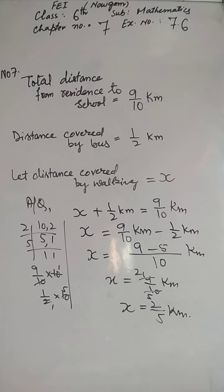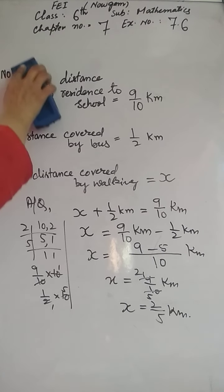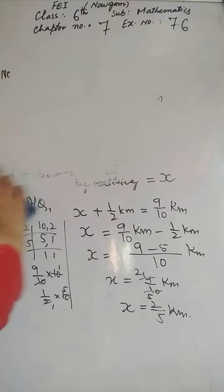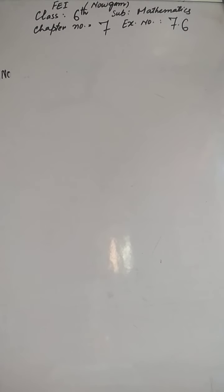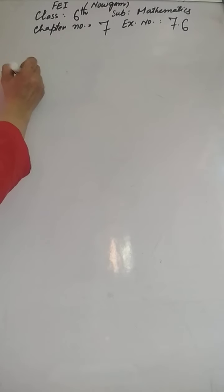Ab chalte hain question number 8 ki taraf. Aisha and Samoon have bookshelves of the same size. Aisha's shelf is 5/6 full of books and Samoon's shelf is 2/5 full. Whose bookshelf is more full, and by what fraction? Aisha aur Samoon ko bookshelves hain jinmein books bhari hui hain. Batao kiska shelf zyada bhara hua hai aur kis fraction se.